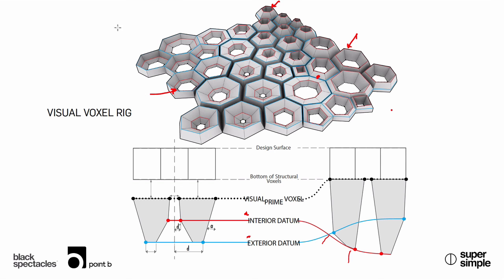So you're referring to this visual voxel rig — in layman's terms, it's a Grasshopper definition that you've built, correct? Yes. And it has, as you're saying, various parametric controls that control the Z direction for the red lines and the Z direction for the blue lines, as well as the aperture.